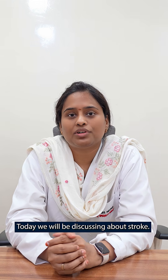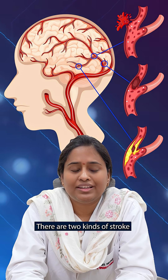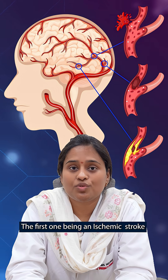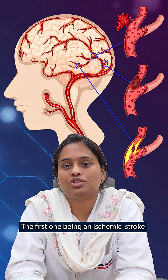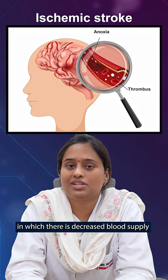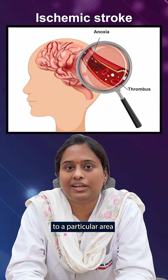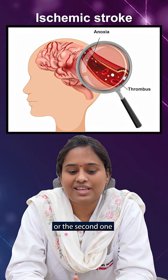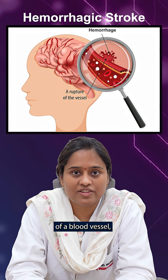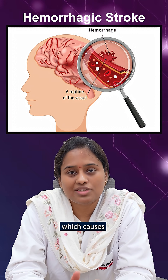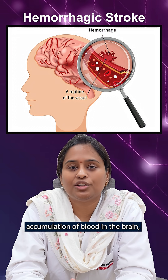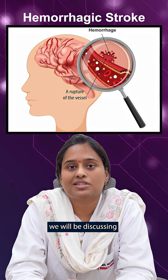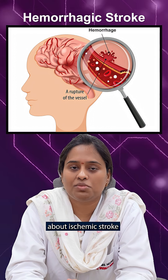Today, we will be discussing about stroke. There are two kinds of stroke when it comes to the central nervous system. The first one being an ischemic stroke, in which there is decreased blood supply to a particular area, or the second one, in which there is a rupture of a blood vessel causing accumulation of blood in the brain. Today, we will be discussing about ischemic stroke.